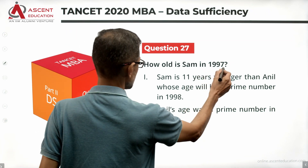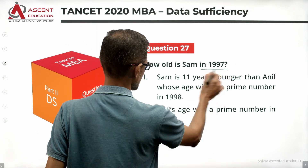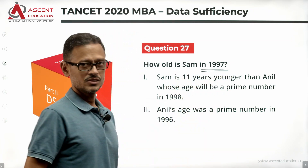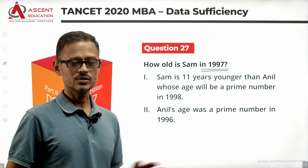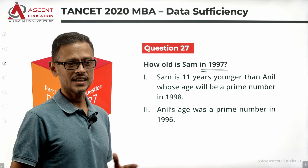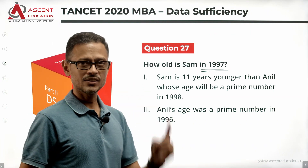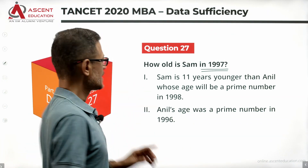The question is: How old is Sam in 1997? We need to find Sam's age in 1997. Two statements are given to you, and we will take a look at them in a while.